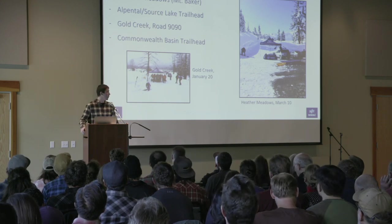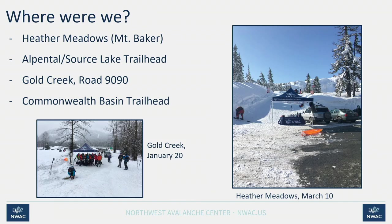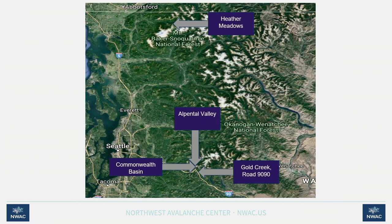We were out on ten separate weekend days this past winter — that number is going up this year. We spent two days at Mount Baker up at Heather Meadows, four days at Alpenthal, and two days each at Gold Creek and Commonwealth. Most of our efforts were concentrated in the Snoqualmie Pass area. This year we're spreading out, going all up and down the Cascades from Baker down to Mount Hood, potentially into the Olympics and onto the East Slopes as well.